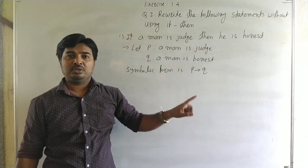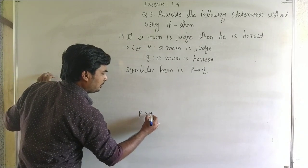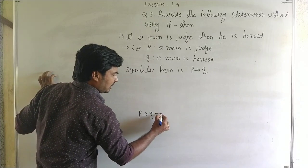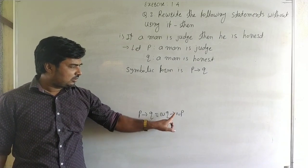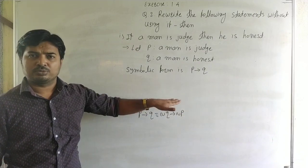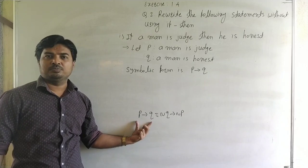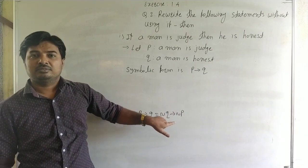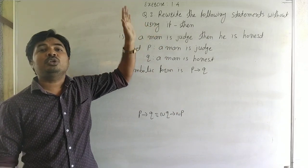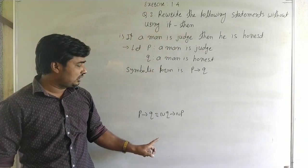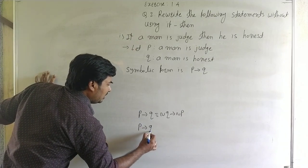By the conditional law, we know that P implies Q is equal to its equivalent statement: negation Q implies negation P. That is the law of contrapositive. Also, P implies Q is equal to negation P or Q. However, the contrapositive is also an if-then statement, and the question asks us to rewrite without using if-then.